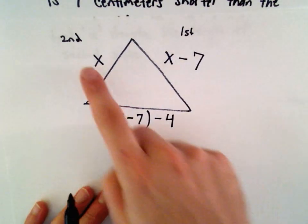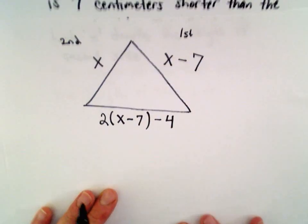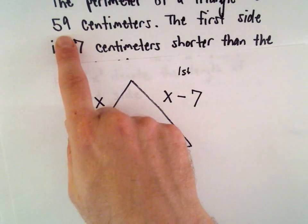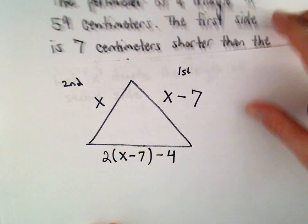So, to find the perimeter, we just add up each length. And we know in this case that the perimeter is 59 centimeters.